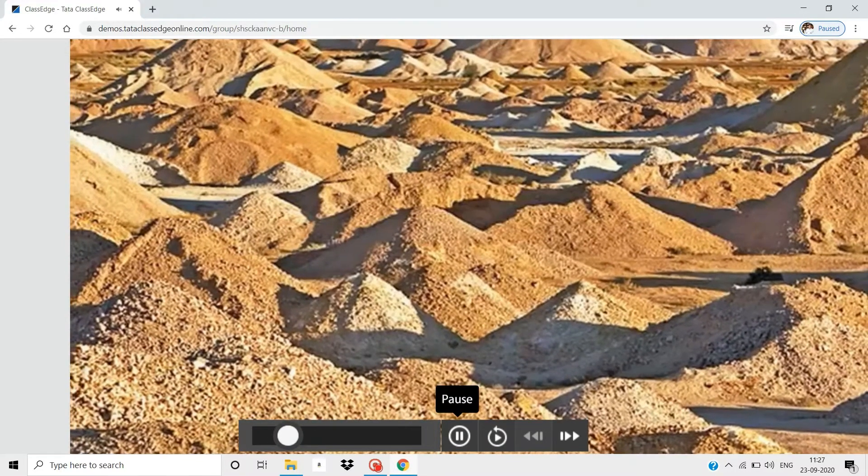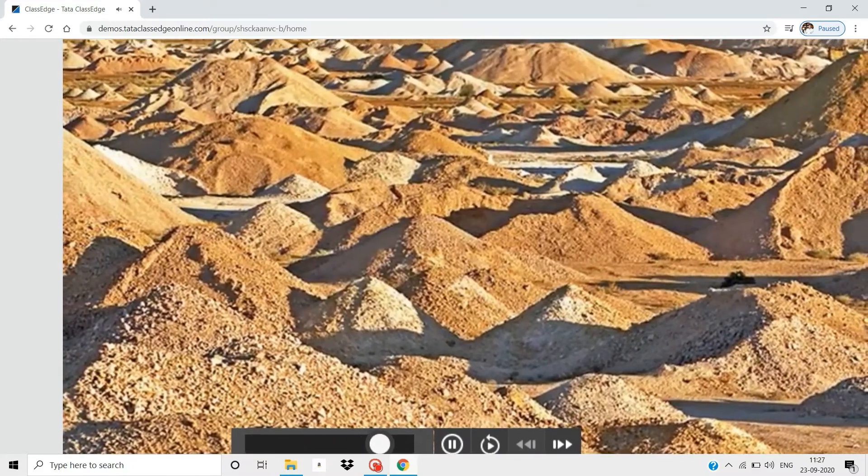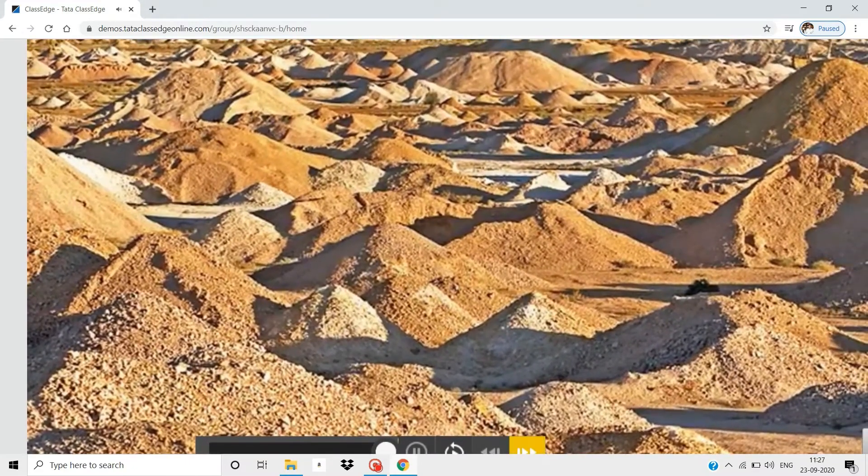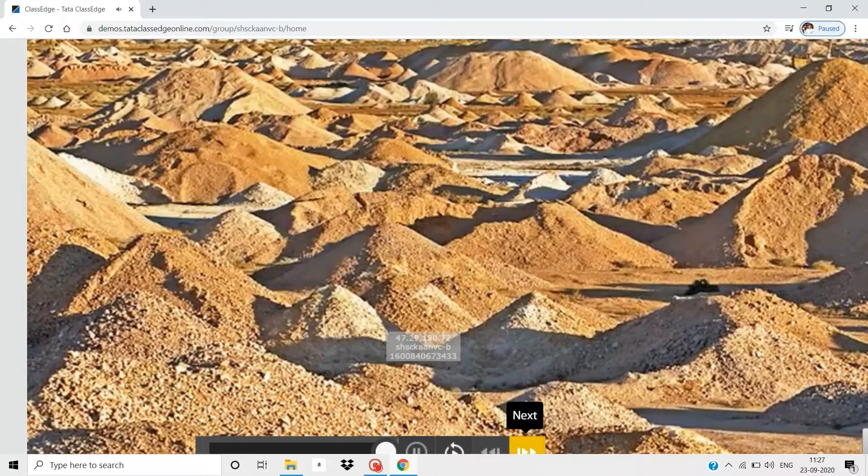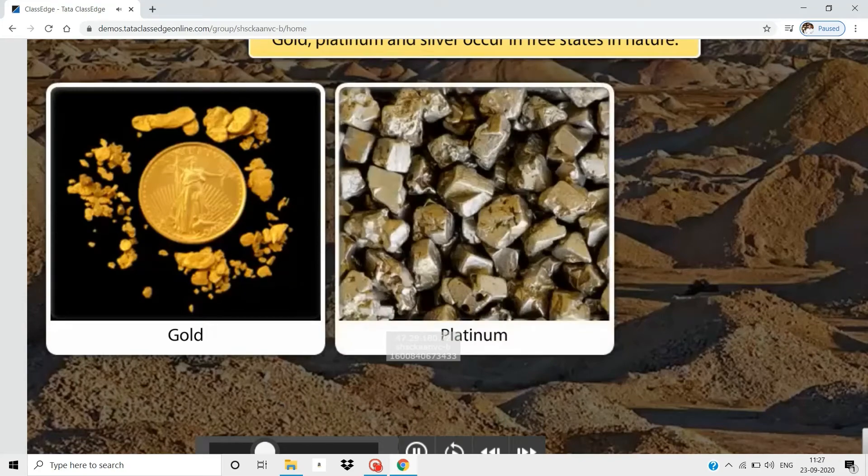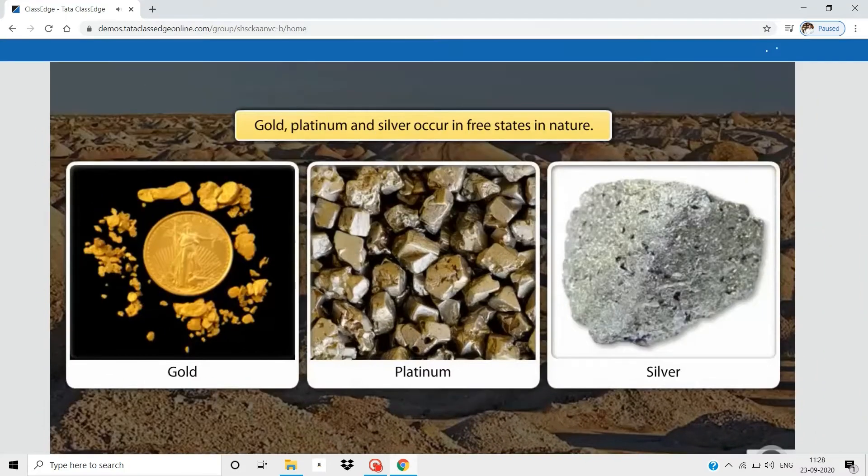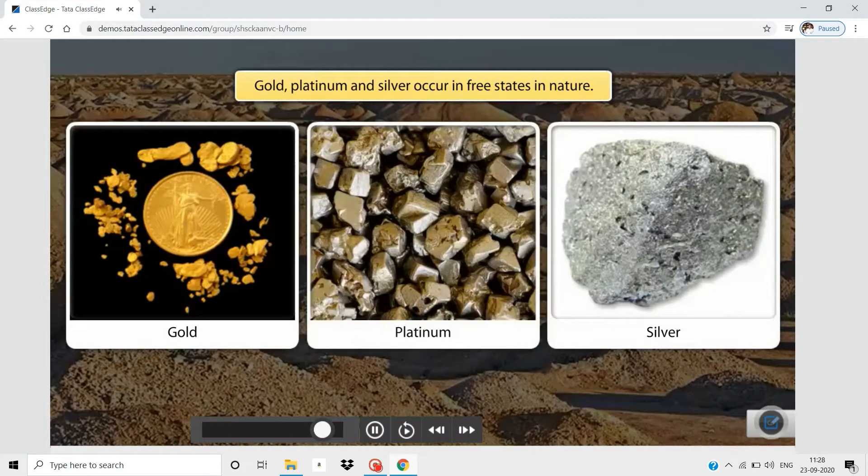In nature, metals occur in free states and combined states both. Metals such as gold and platinum, which are not reactive, or metals like silver, which are chemically less reactive, occur in free states.